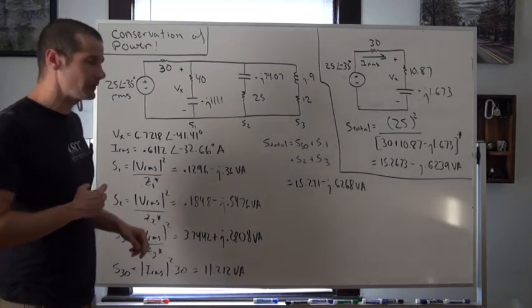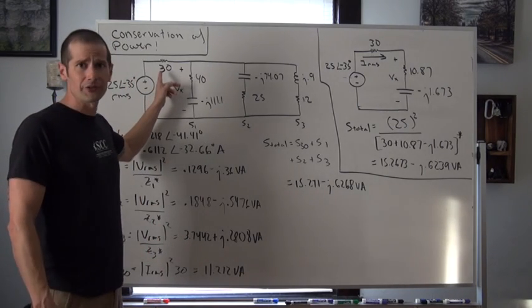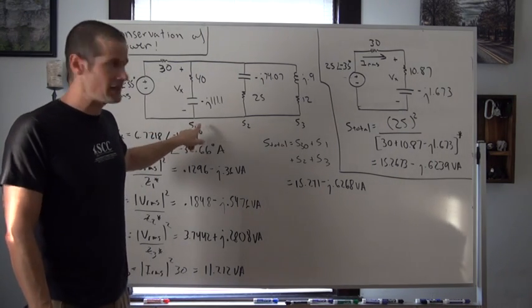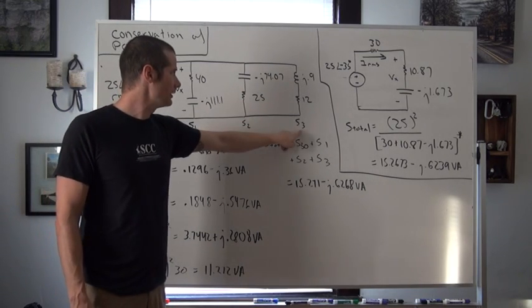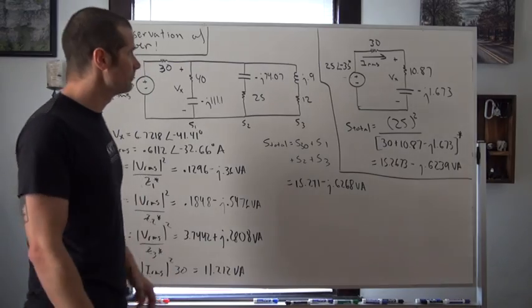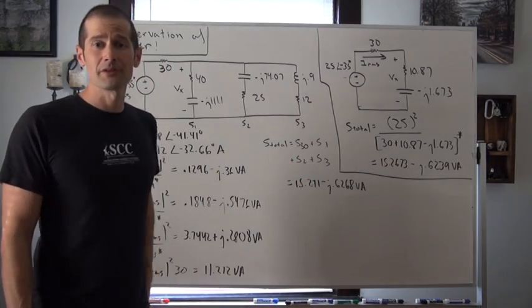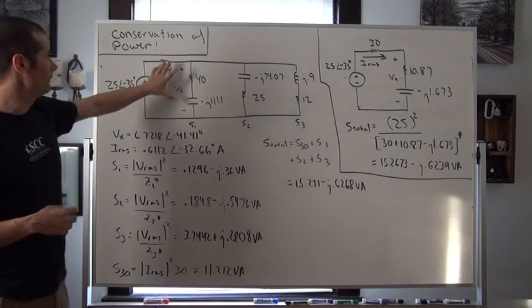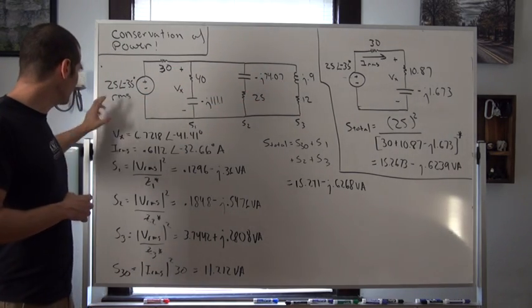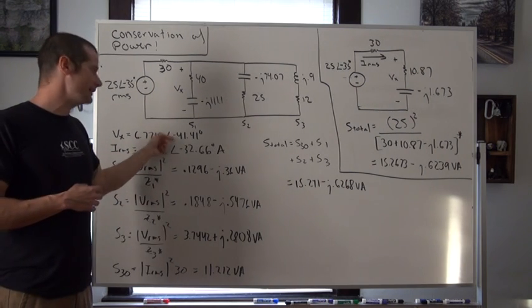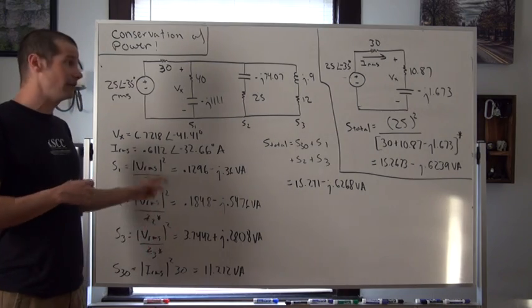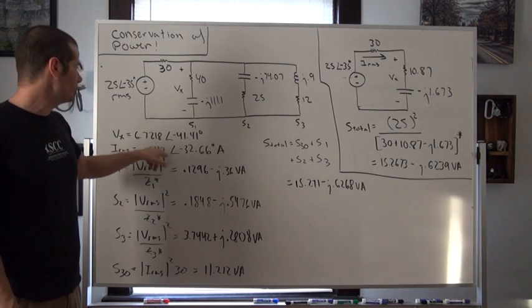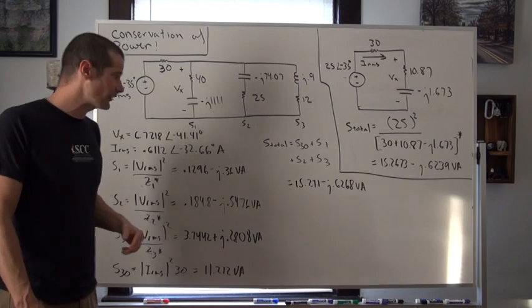We're going to look at four different branches within the circuit: the power across the 30-ohm resistor, and then the powers from the branch denoted as S1, the power delivered to S2, and the power delivered to S3. Going back to the prior problem, we found the voltage across each branch, which came out to be 6.7218 at an angle of negative 41.4 degrees, and the current supplied from the source was 0.6112 at an angle of negative 32.66 degrees amps.